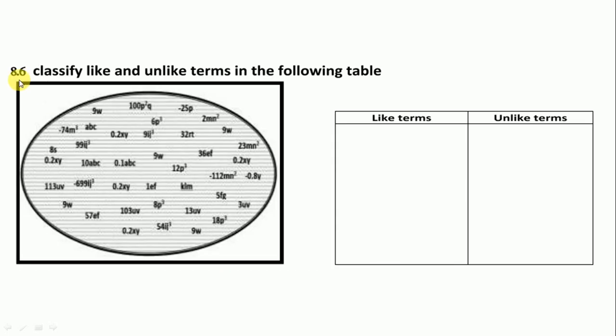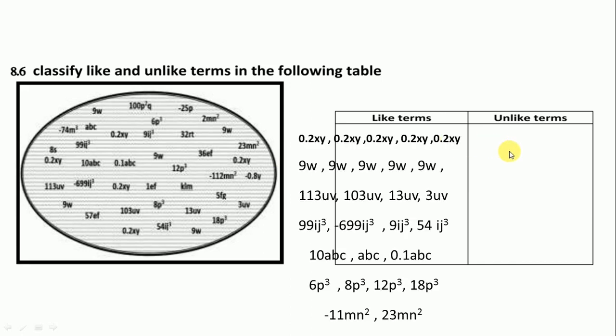Next is 8.6: Classify like and unlike terms in the following table. The picture is a little bit not clear and the number is very small. We try to write all the like terms and unlike terms. Here the like terms and unlike terms are shown. This is question 8.6.